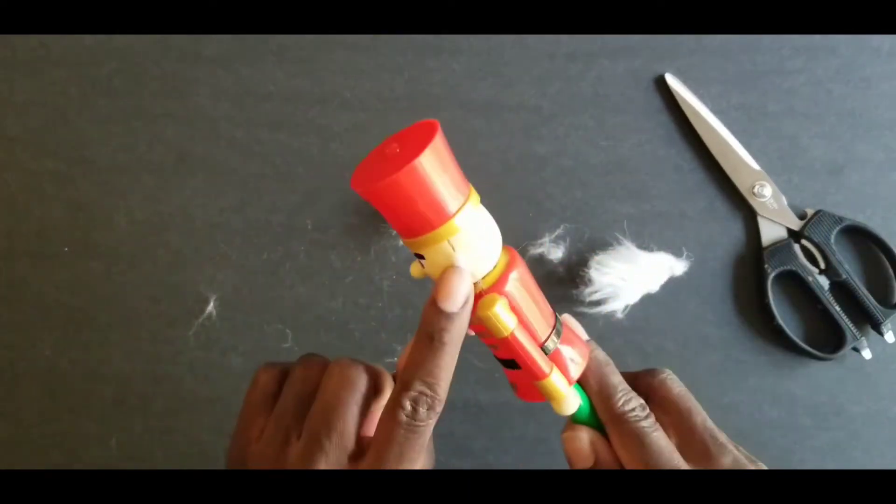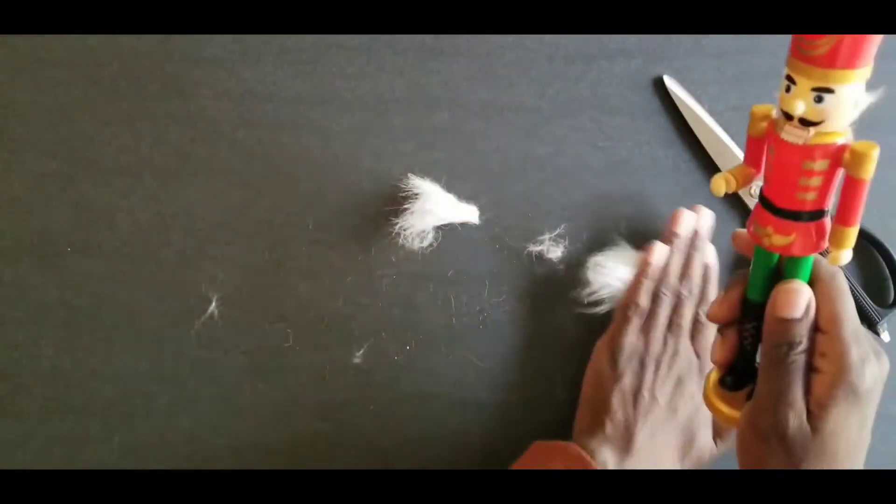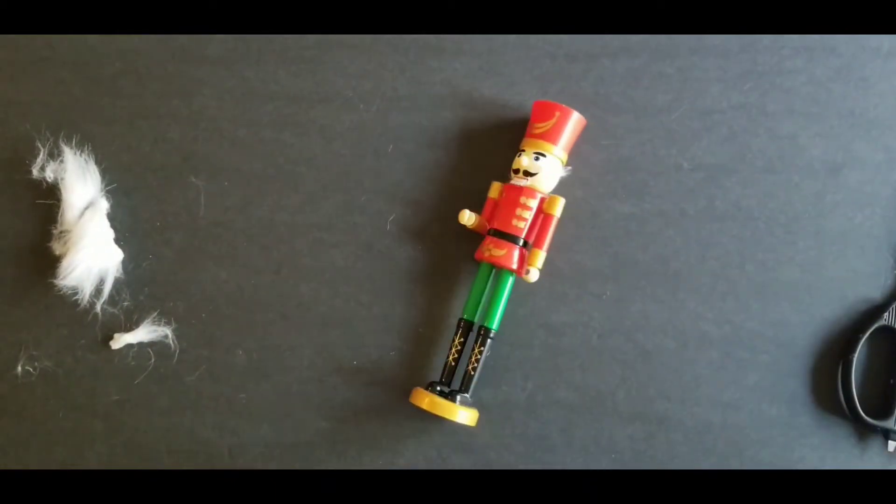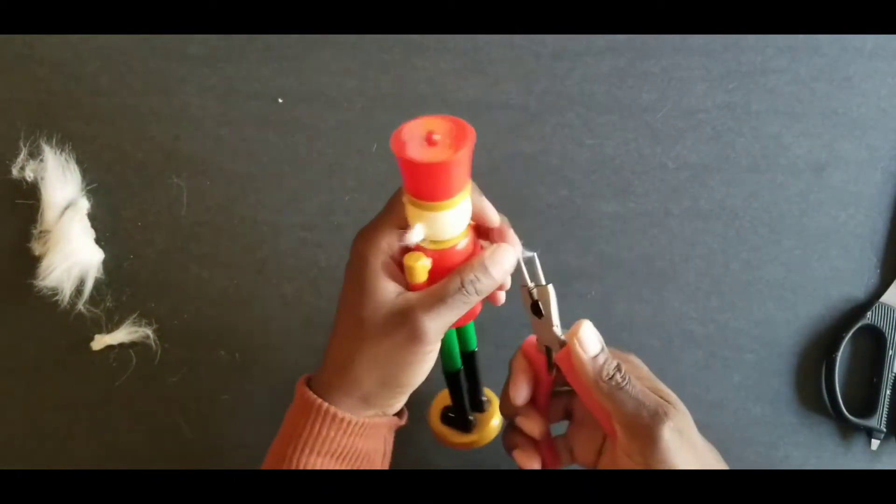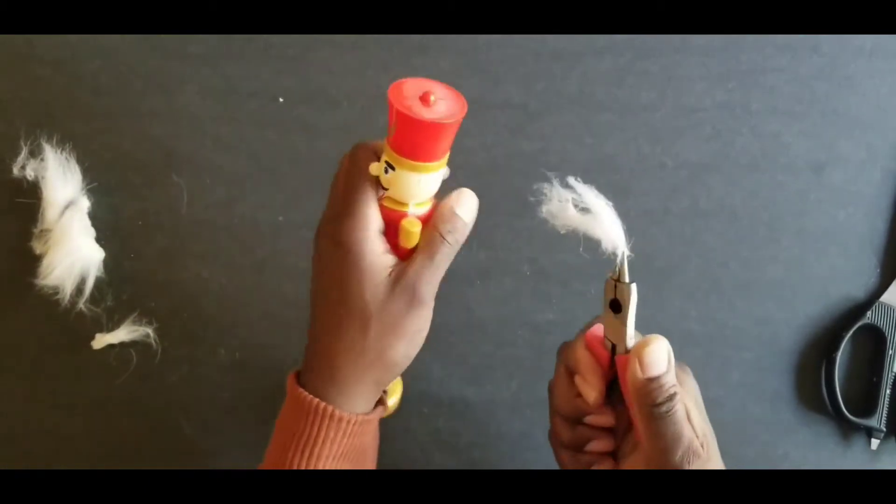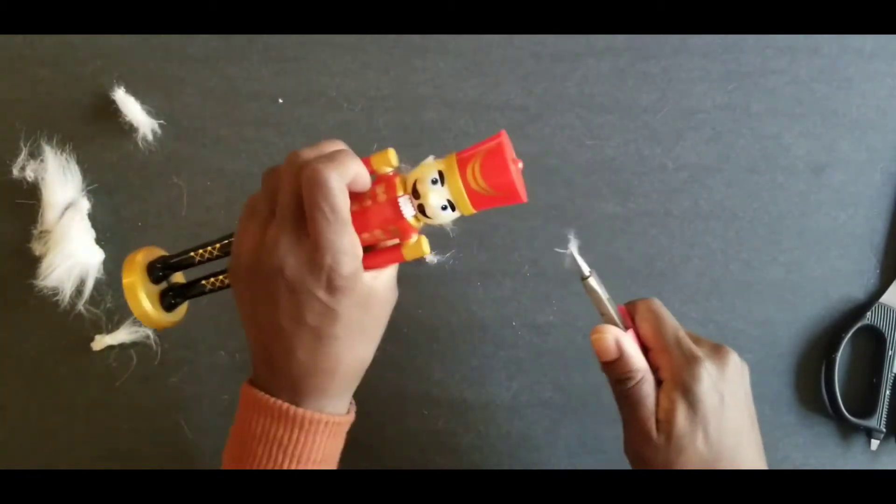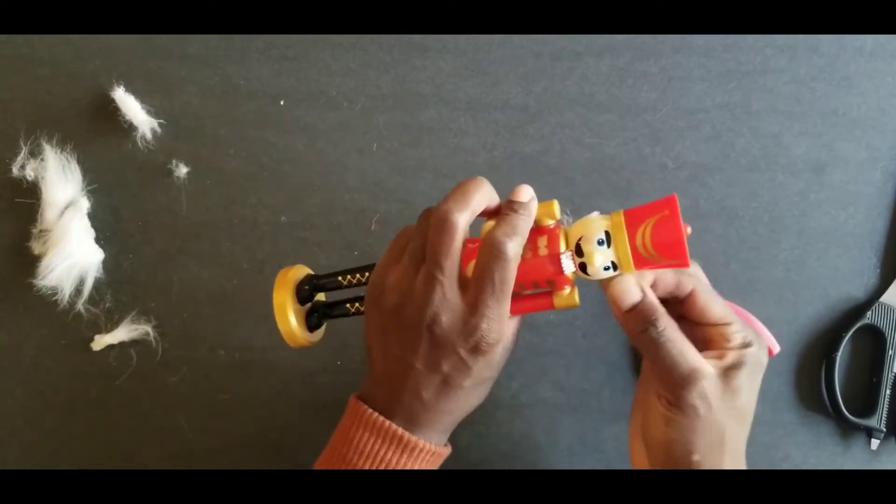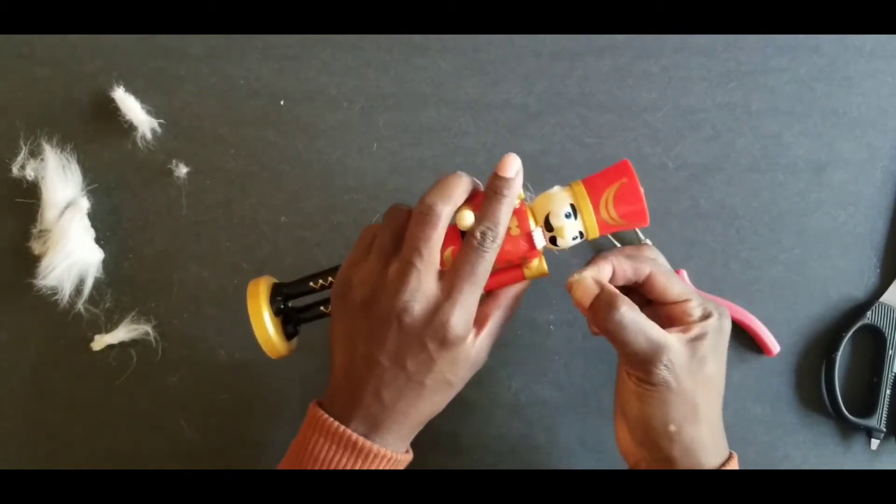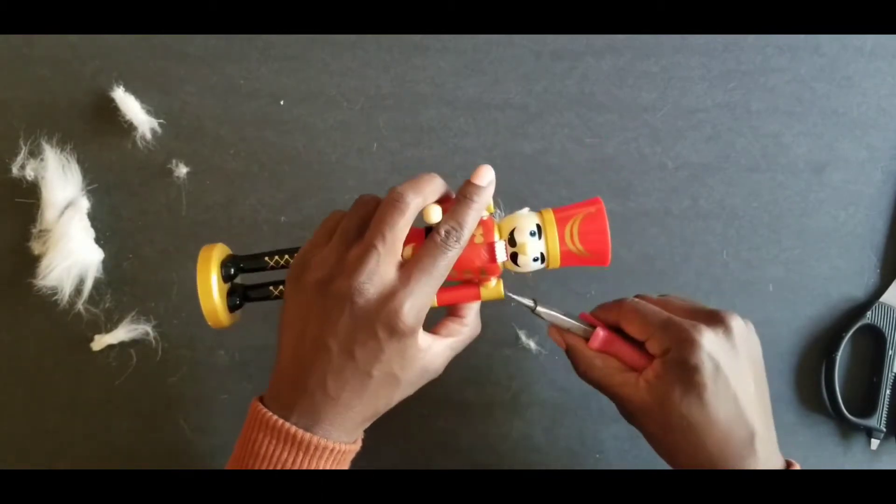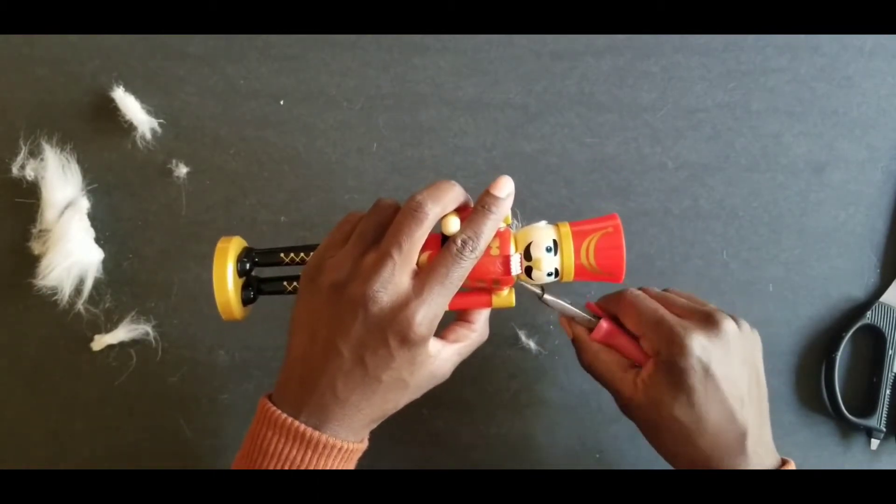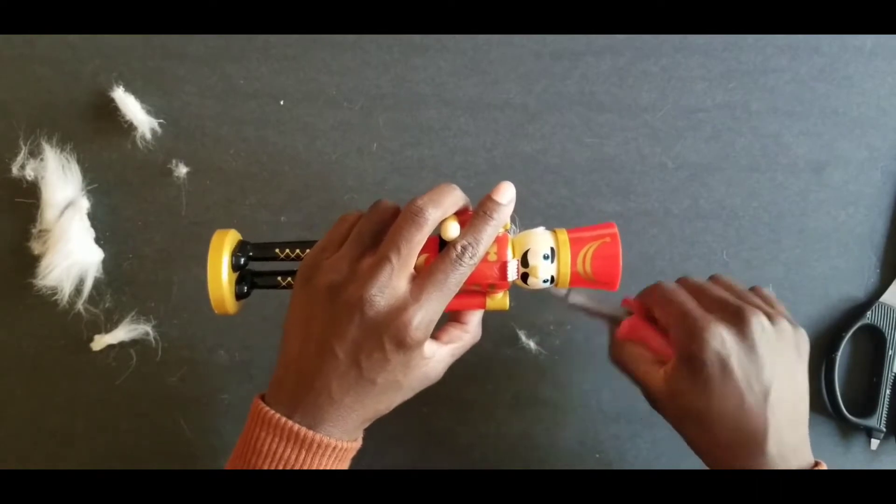They're stuck in the cracks of the nutcracker and on the glued pieces, so you kind of have to take your time with it. But you definitely want to get all the hair off and rub off the adhesive that's under that beard, because when you spray paint it, anything that you leave on will show up.